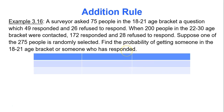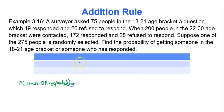Another example: a survey asked 75 people in the 18–21 age bracket, of which 49 responded and 26 refused. 200 people in the 22–30 age bracket were contacted; 172 responded and 28 refused. Suppose one of the 275 people is randomly selected. Find the probability of getting someone in the 18–21 age bracket or someone who responded. We organize the data in a table — a contingency table — as that's the best way to work out these questions.